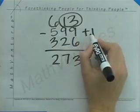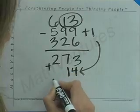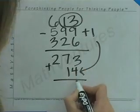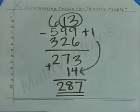So we'll add 13 plus 1 down here to get our final answer. 273 plus 14 is 287, and that's our final answer.